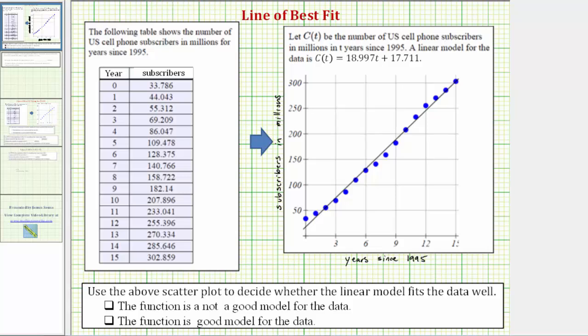Looking at our first question, we're asked to use the scatter plot to decide whether the linear model fits the data well. We can visually see that it does fit the data well, and therefore the function is a good model for the data. Because it is a good model, we can now use the function c(t) to make predictions.